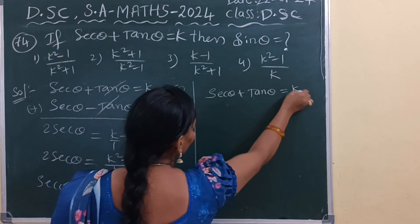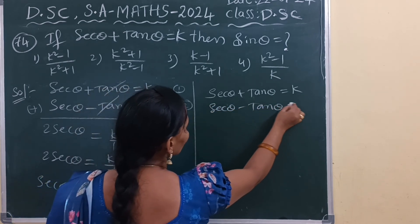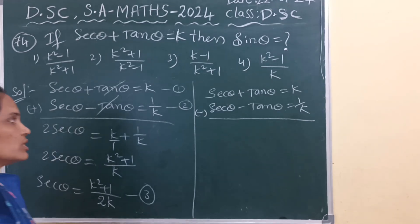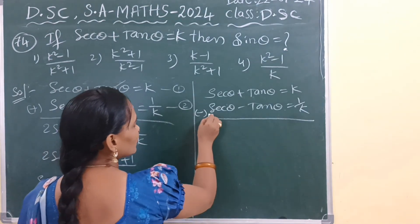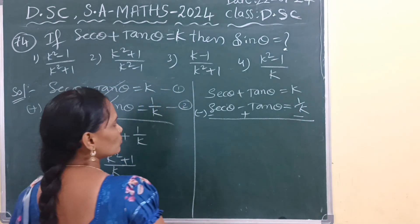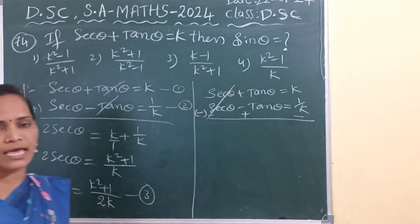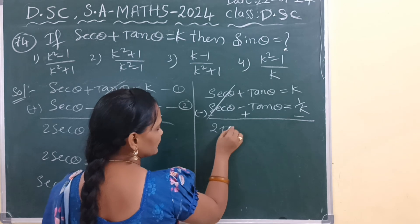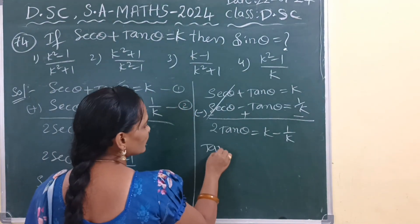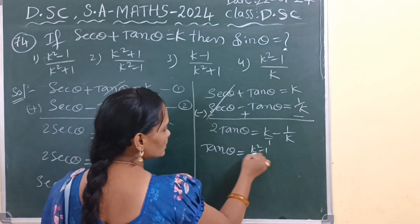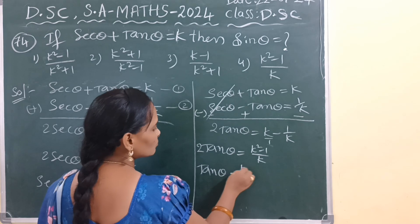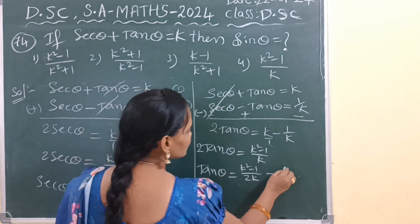Now take equation 1 minus equation 2. When we subtract, the symbols change: sec theta minus sec theta cancels. We get plus tan theta plus tan theta, which is 2 tan theta, equal to k minus 1 by k. Taking LCM, we get k squared minus 1 over k, divided by 2. So tan theta equals k squared minus 1 over 2k. Call this equation 4.